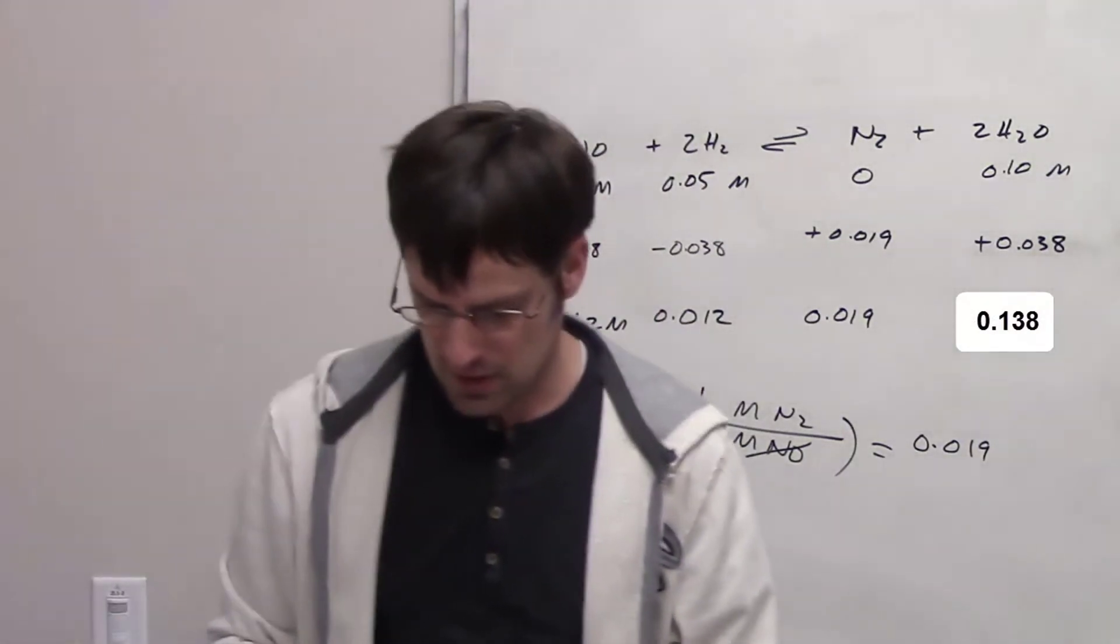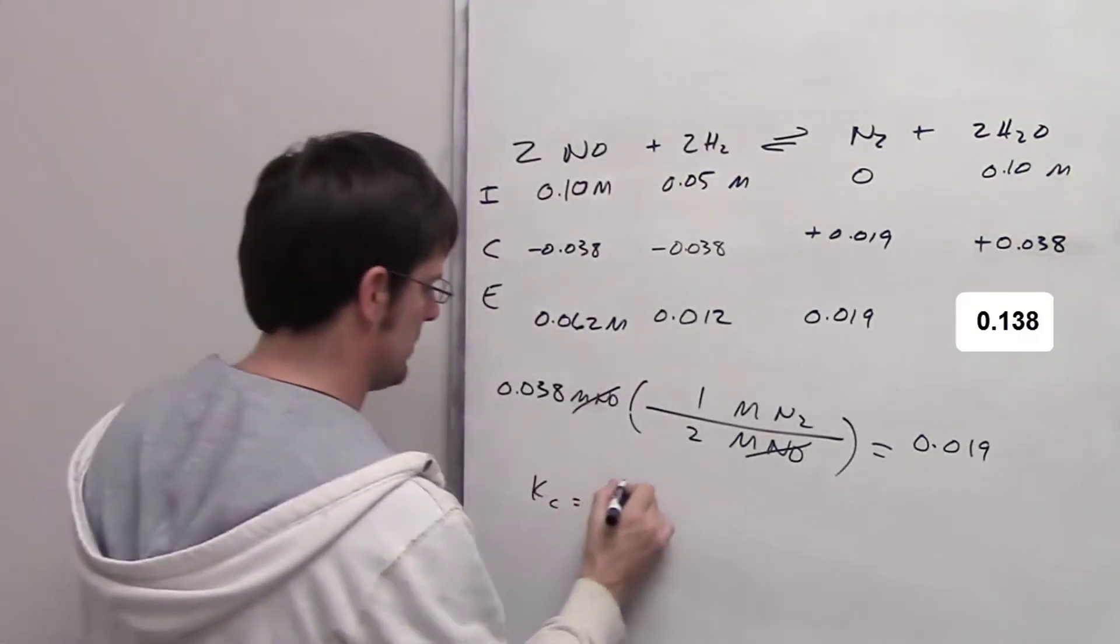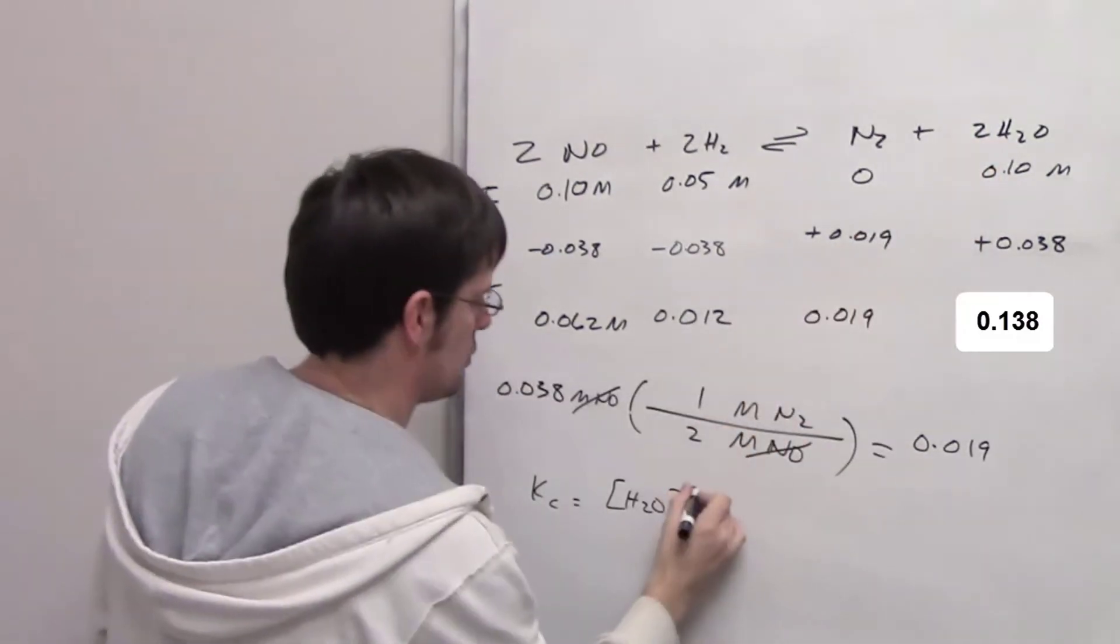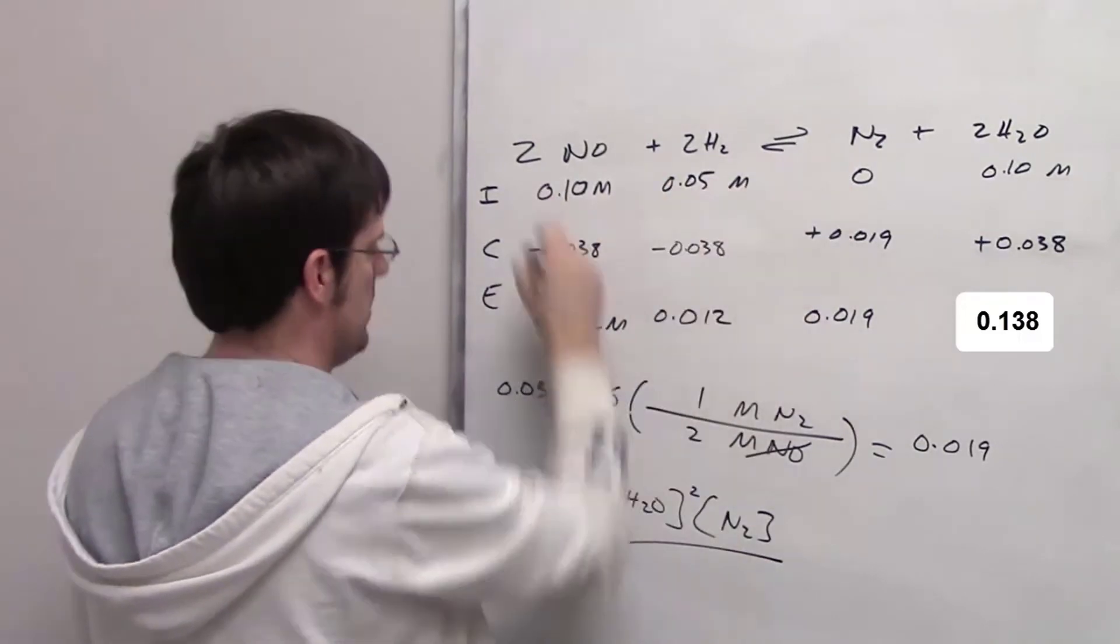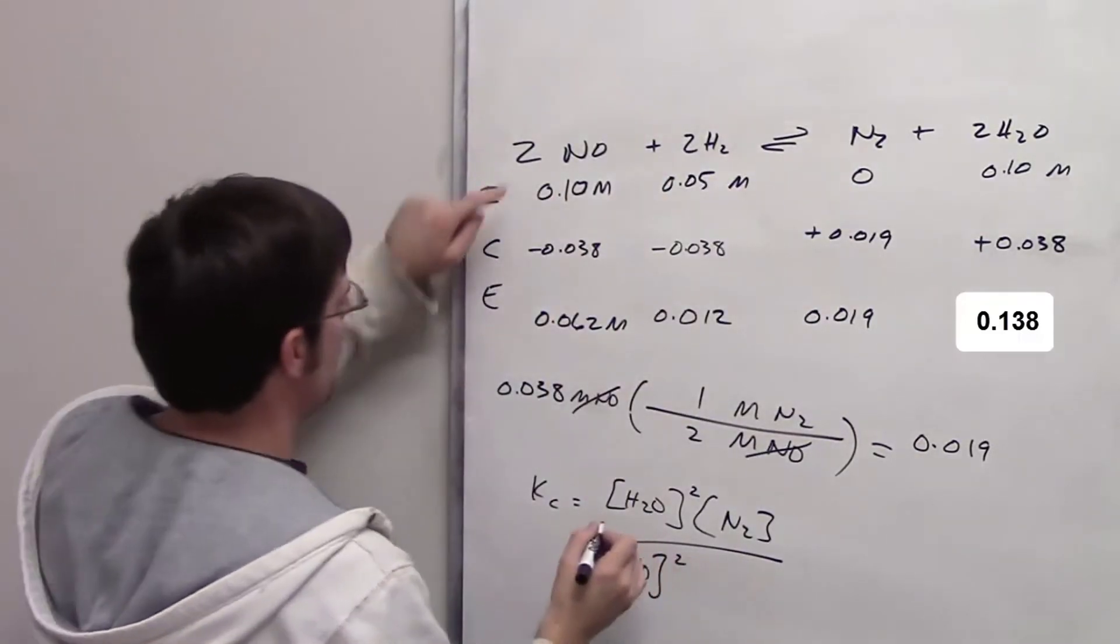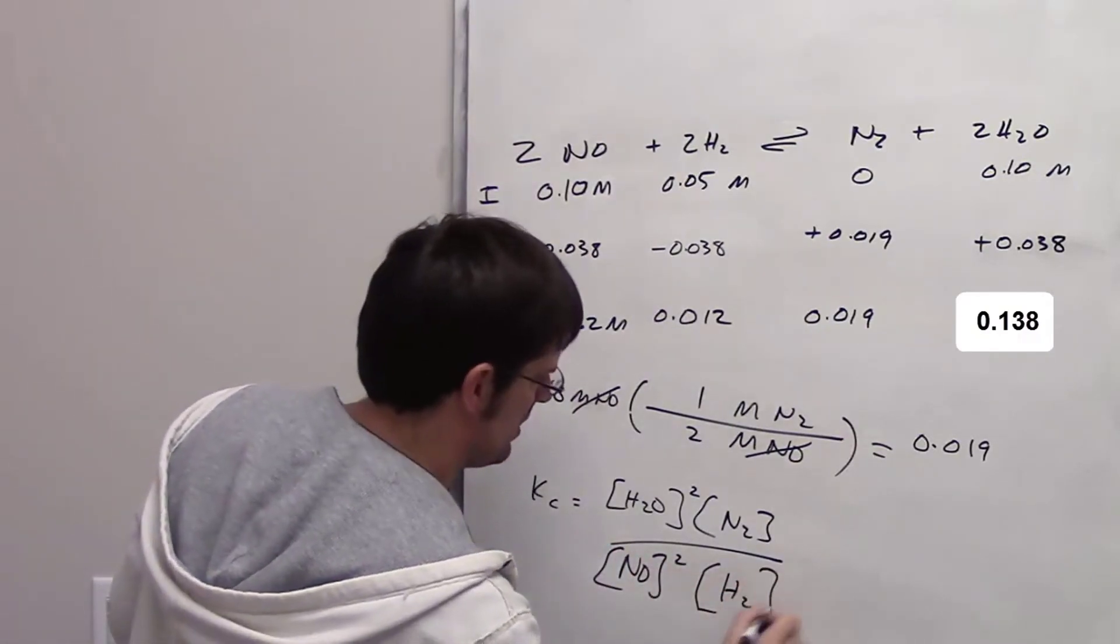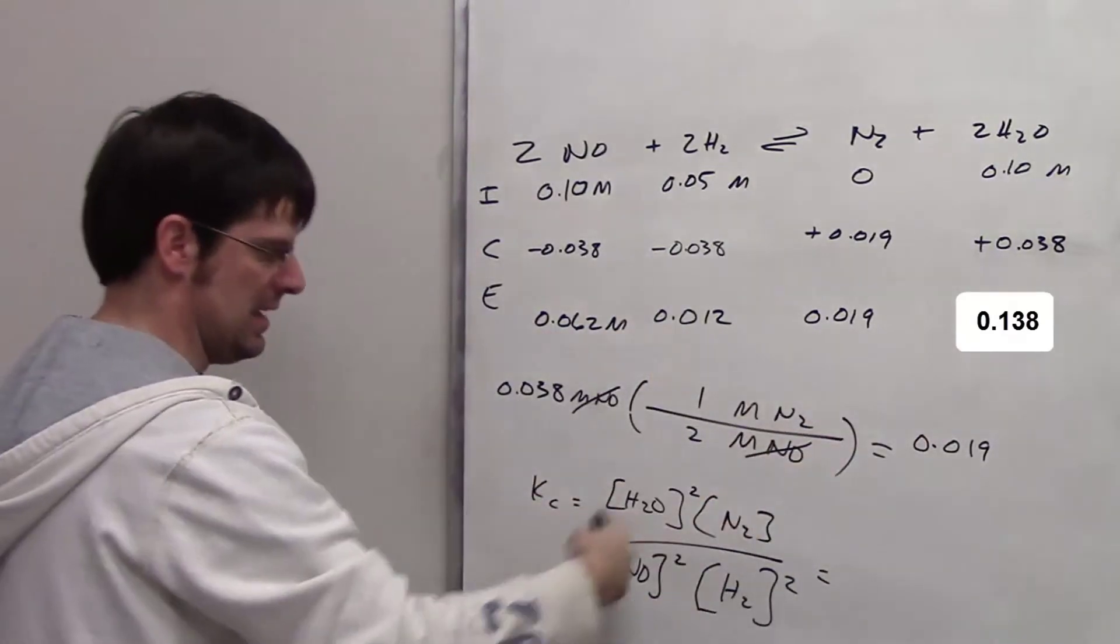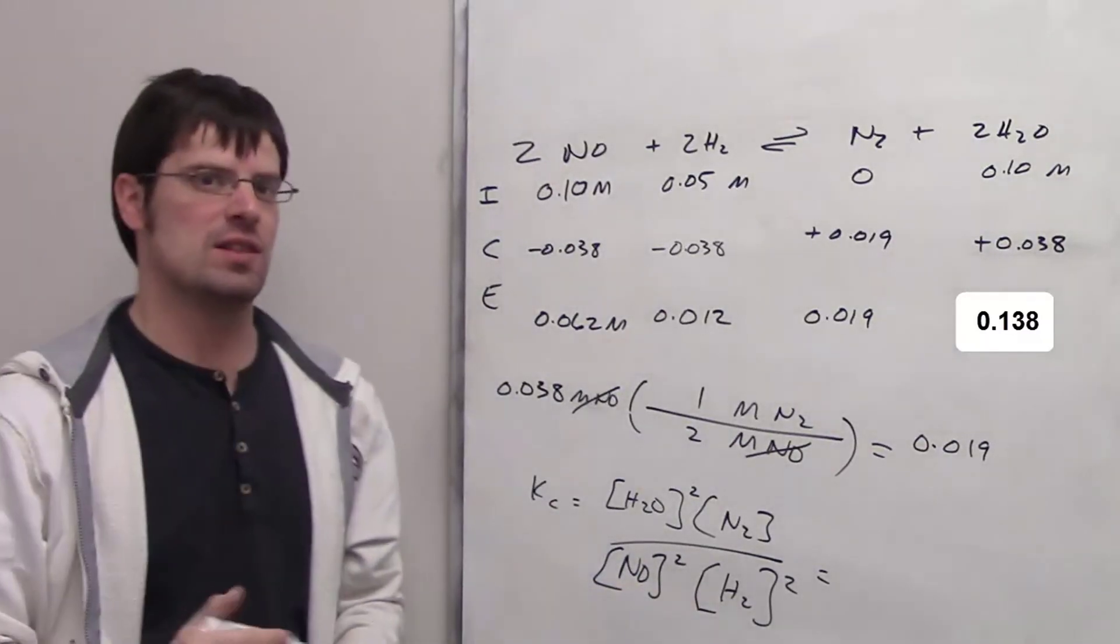The next half of this question asks us to calculate Kc. Kc is going to be equal to the equilibrium concentrations of my products, H2O squared multiplied by the concentration of N2 to the first power, then divided by the individual concentrations of my NO squared, multiplied by the concentration of my H2 squared. I have my equilibrium concentrations right here on this row. I throw them into the respective places, punch into my calculator, and I should get the correct answer.